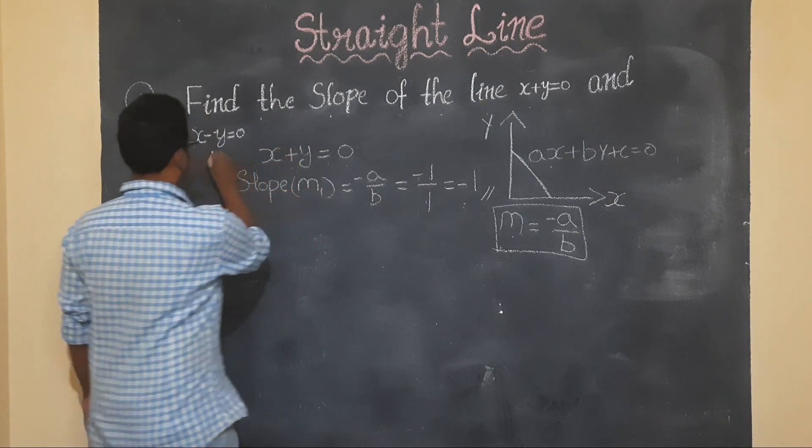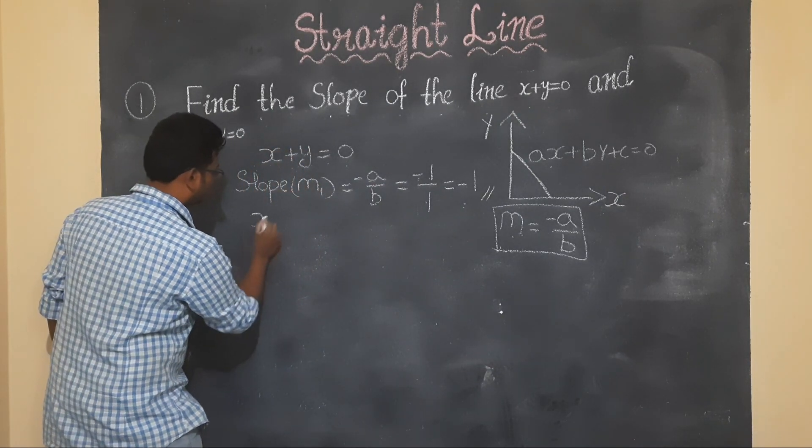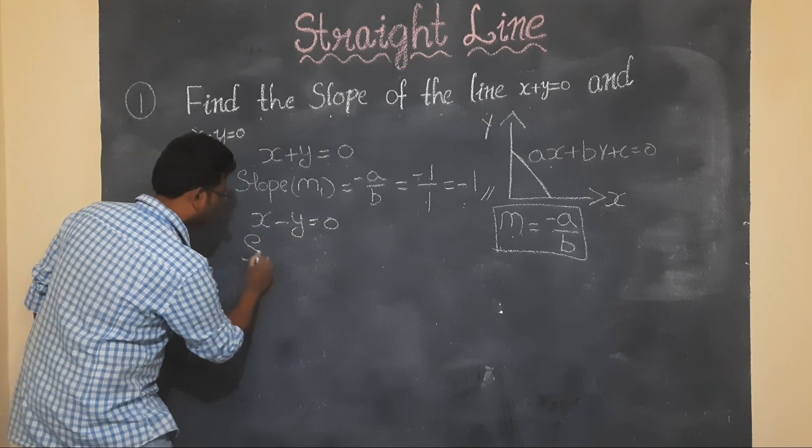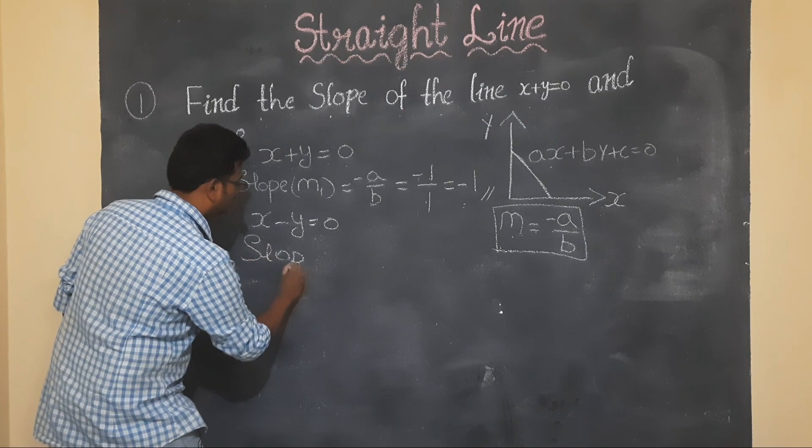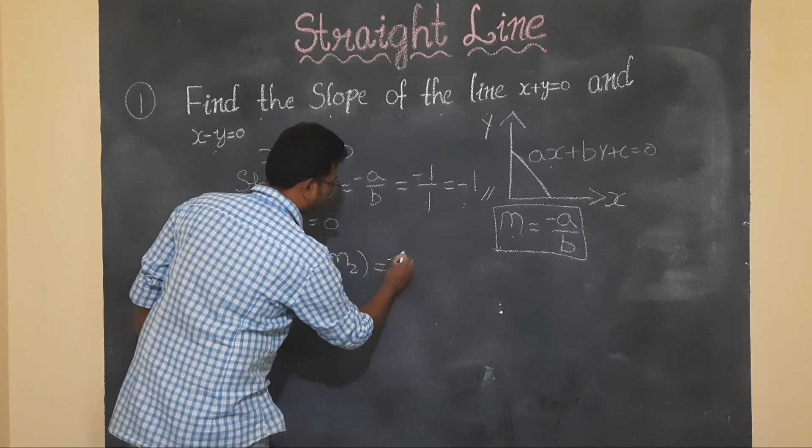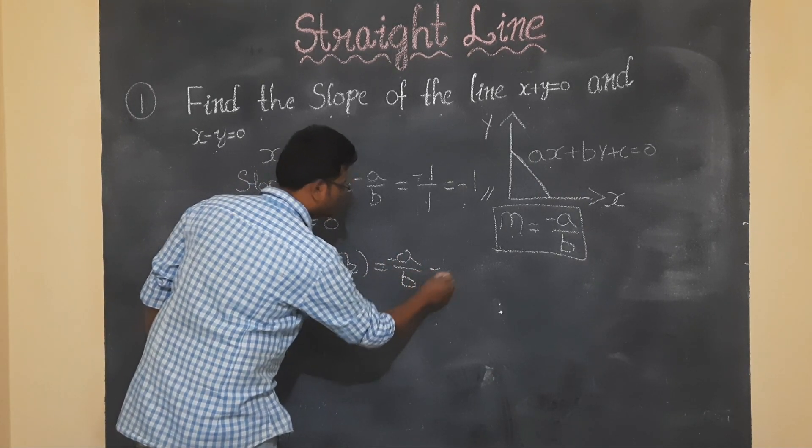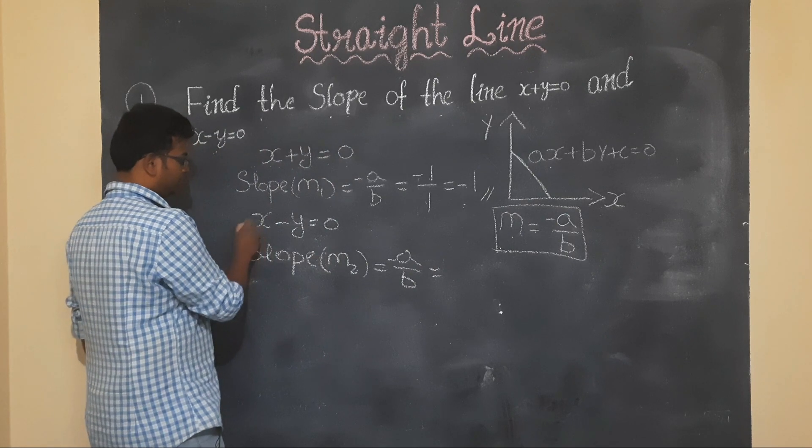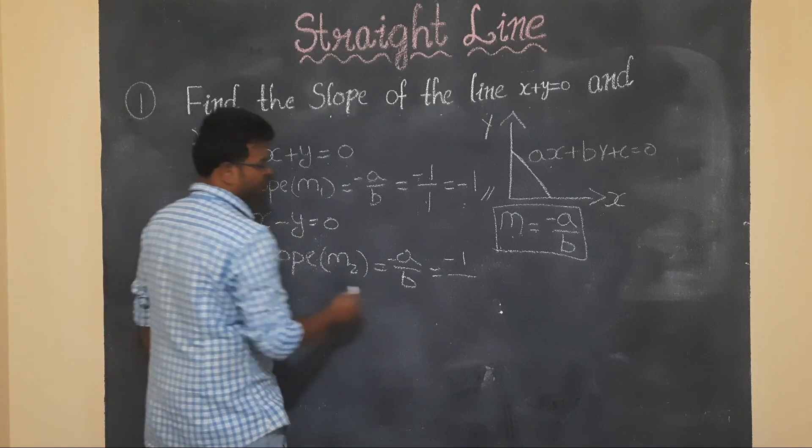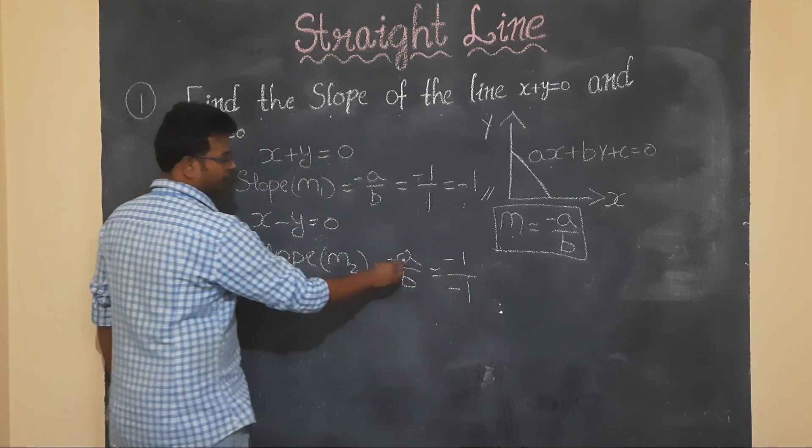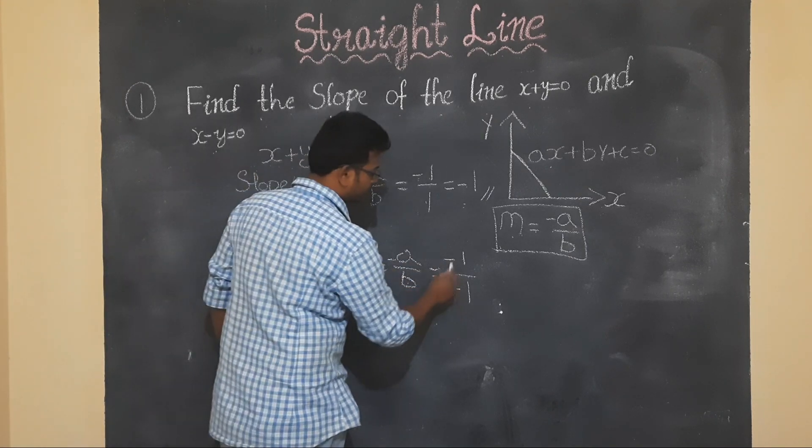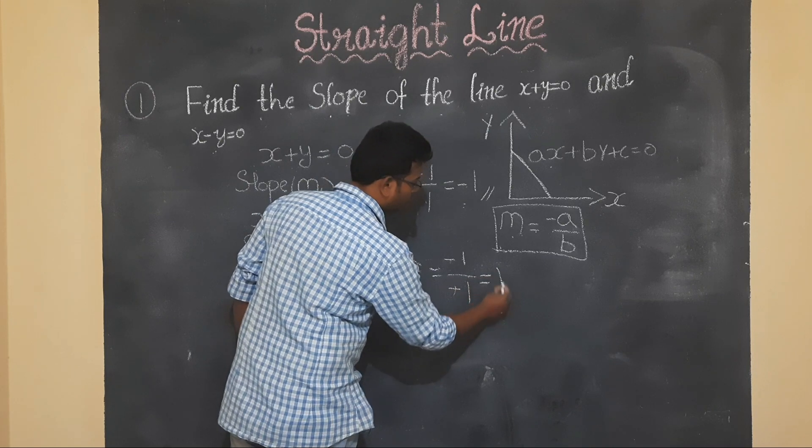My next question got this. So x minus y is equal to 0. Slope m2, continue the same formula minus a by b. So a is 1 and b is minus 1. So minus 1 by minus 1 is equal to 1.